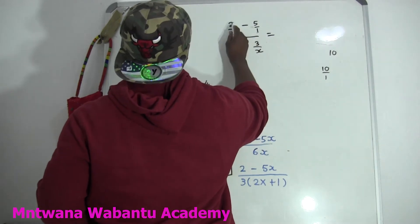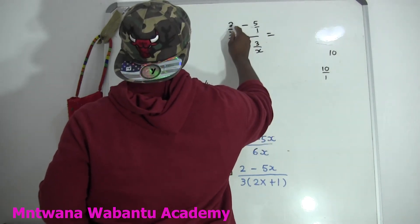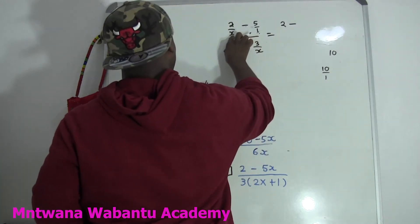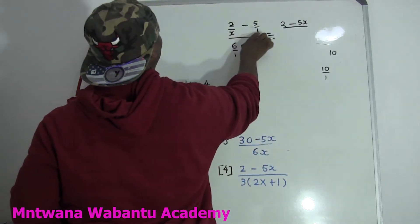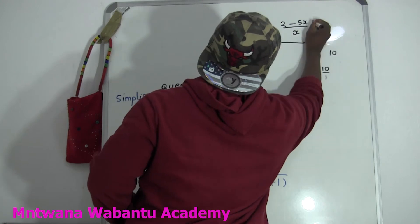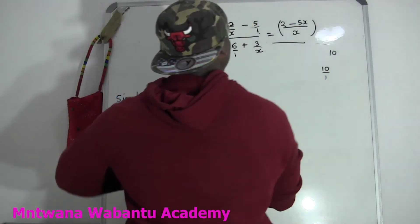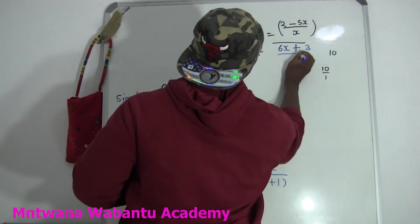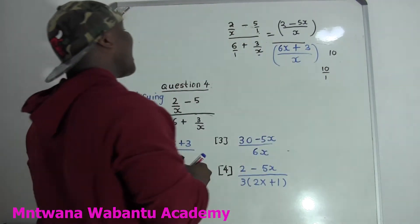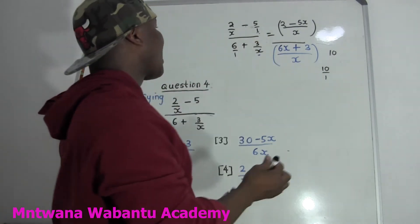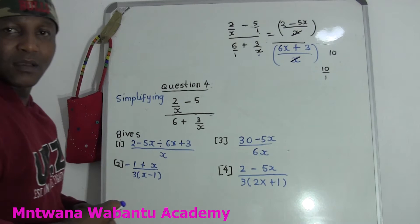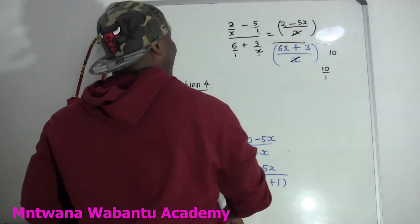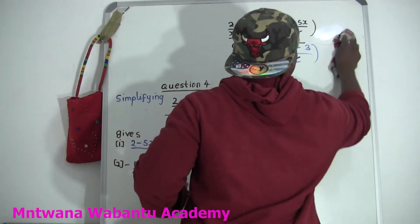Now I'm going to make a common denominator. I'm going to take this number and multiply it by that. You only do that if your sign is plus or minus. You must start with the correct side, otherwise you'll be wrong. So 1 times 2 equals 2, and your sign is negative. Then x times 5 equals 5x, over x times 1 equals x. Now we go for the denominator — same game: 6 times x equals 6x, plus 1 times 3 equals 3, over 1 times x equals x.